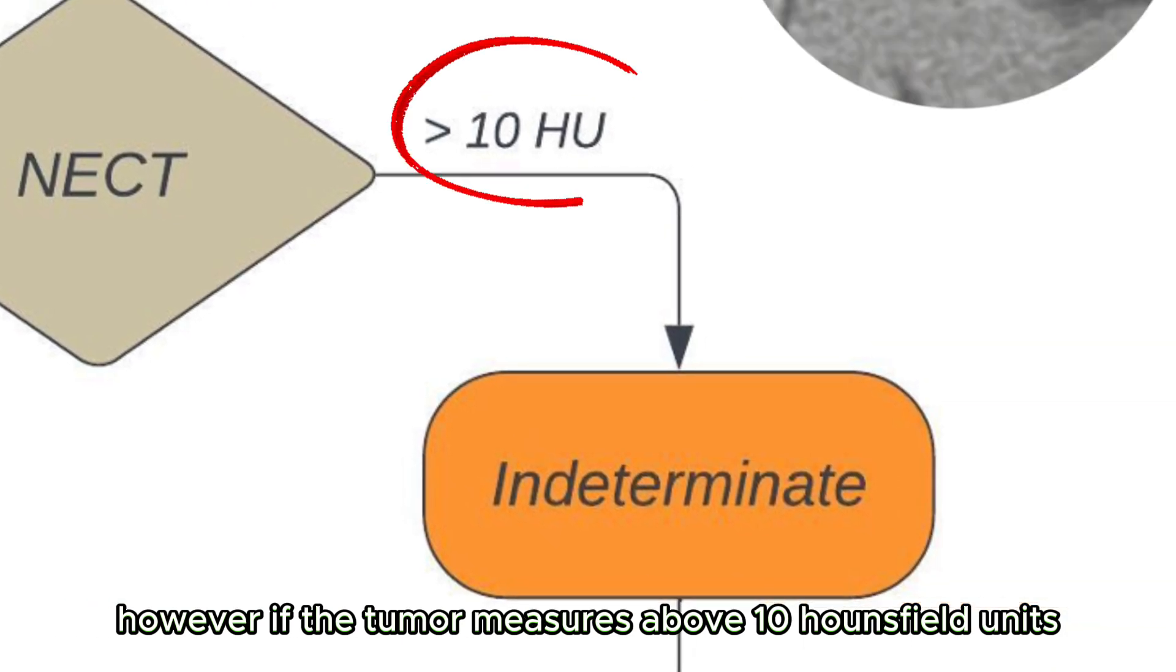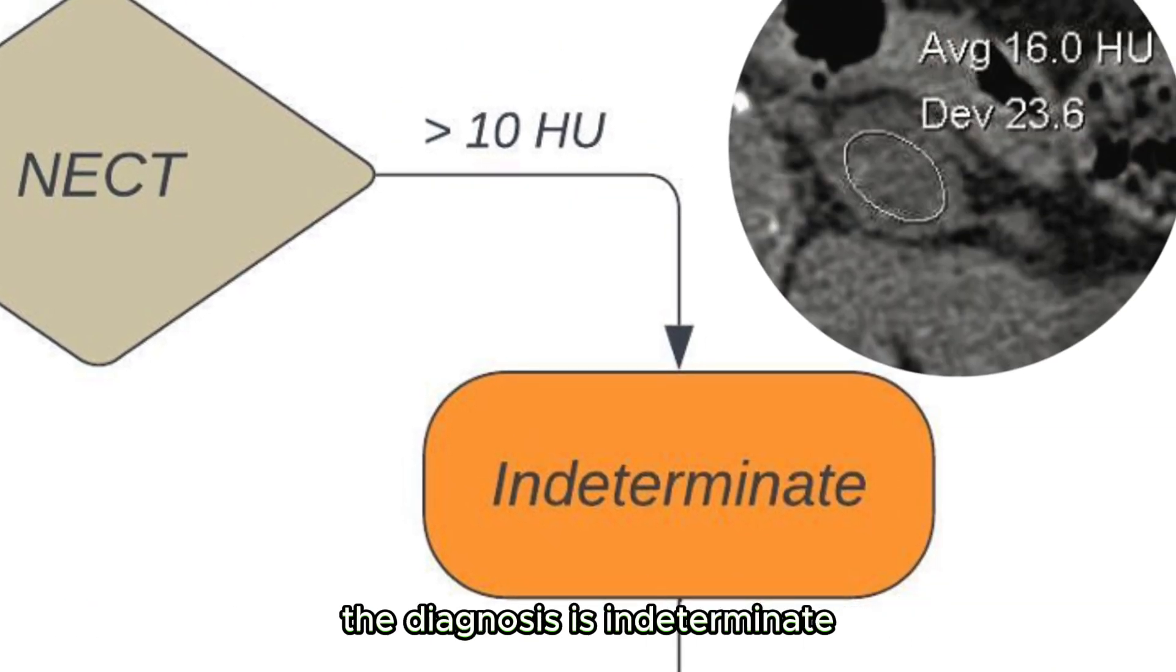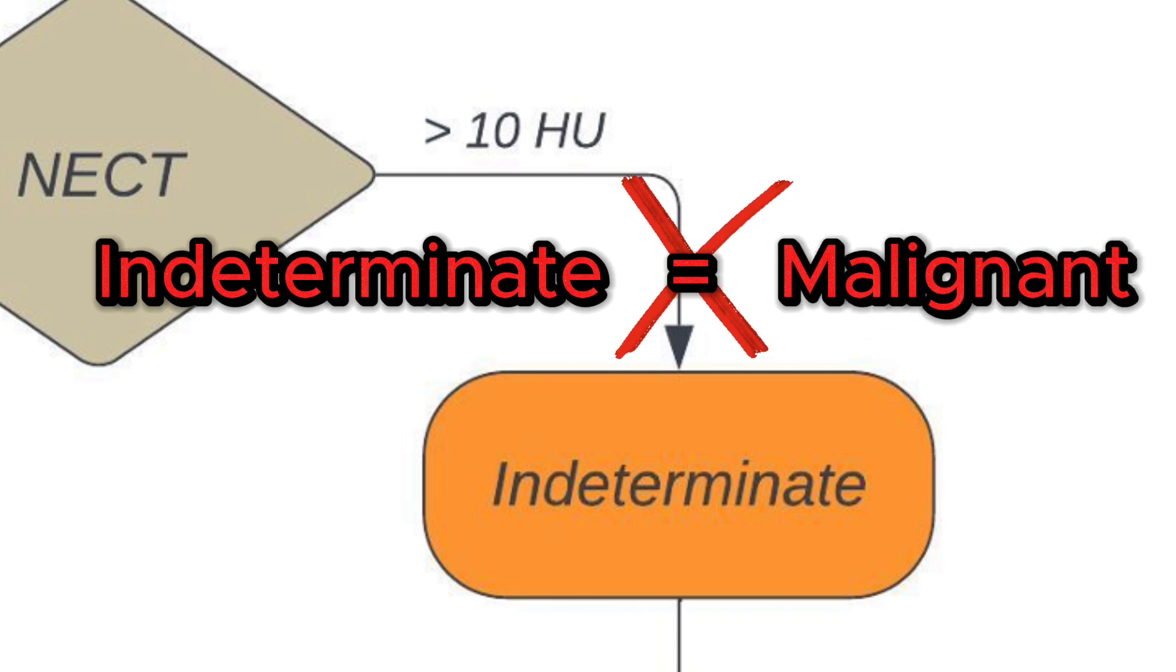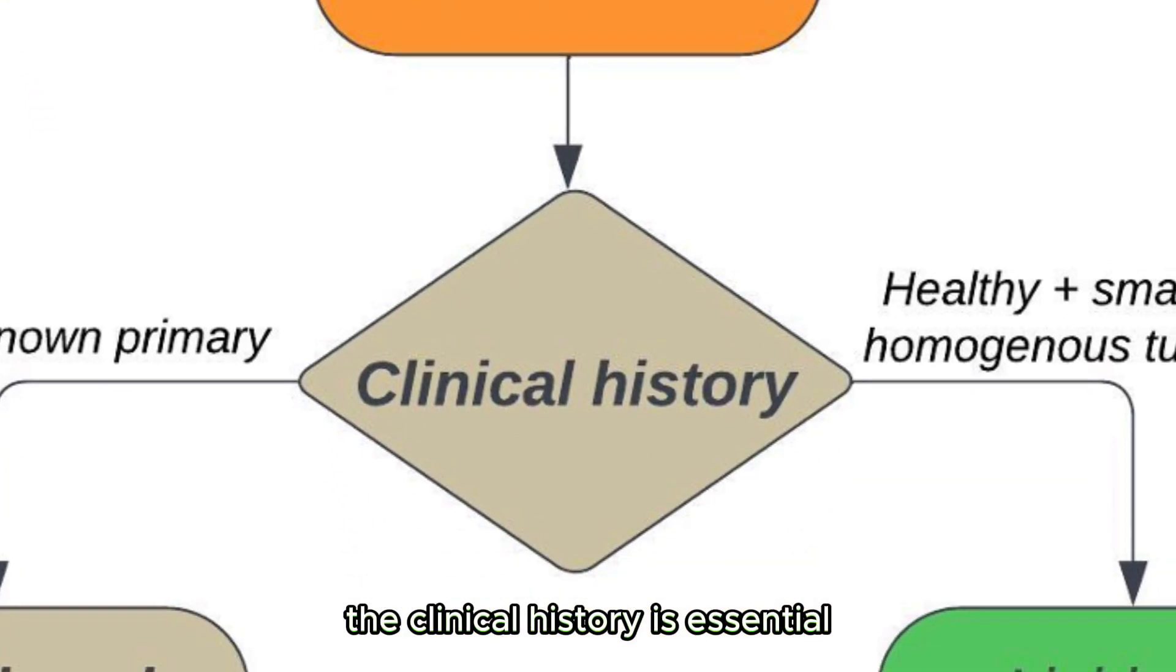However, if the tumor measures above 10 Hounsfield units, the diagnosis is indeterminate. This does not mean that the tumor is malignant. In this case, the clinical history is essential.